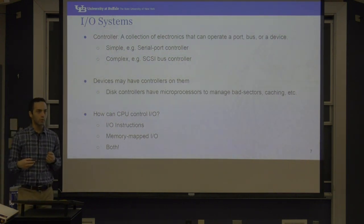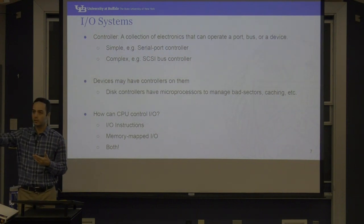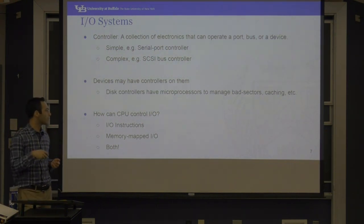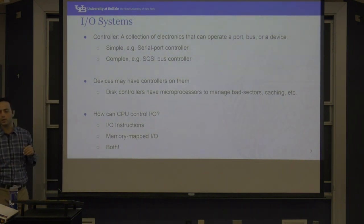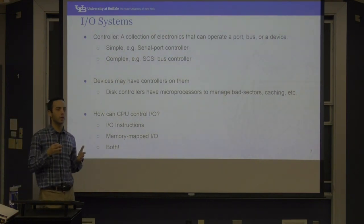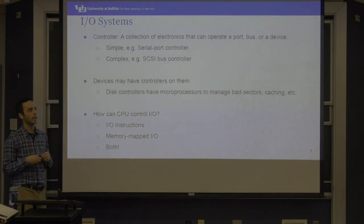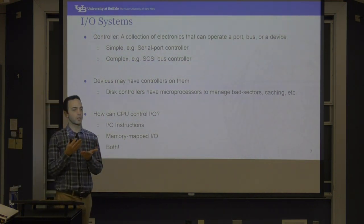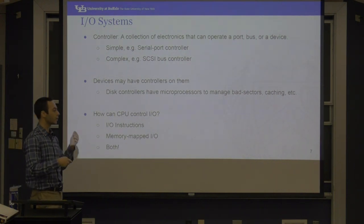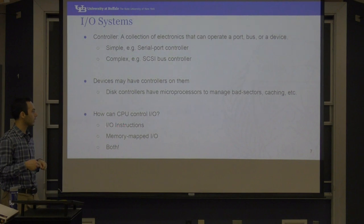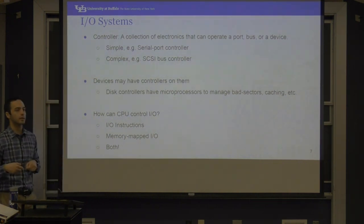How can a CPU control I/O devices? Eventually there must be an instruction in memory, the CPU reads and runs it, and something happens. There are I/O-specific instructions — this has been the case since the early processors, like the 8086, where half the memory address lines were shared between I/O and memory. Since then, I/O instructions have been involved, and you can also use memory-mapped I/O.